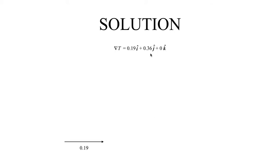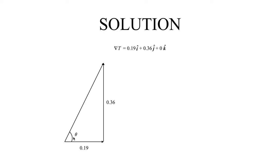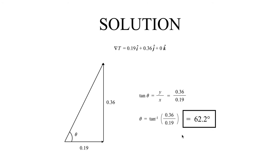Now we have a vector we can work with. Drawing it out using its individual components — 0.19 in the x direction and 0.36 in the y direction — and drawing the resultant gives us a vector traced out by angle theta. To resolve this angle, we use trigonometry. The most sensible function to use is tangent, since we have an opposite and an adjacent component. So tangent of theta equals 0.36 over 0.19. Taking the inverse tangent of both sides, theta equals arctan(0.36 / 0.19), which gives roughly 62.2 degrees, or approximately pi over 3 radians.